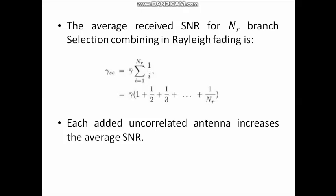Now consider the average received SNR for NR-branch selection combining in a Rayleigh fading channel. The equation is: gamma_SC = gamma_bar × Σ(i=1 to NR) 1/i, which expands to gamma_bar × (1 + 1/2 + 1/3 + ... + 1/NR). For NR = 1, gamma_SC = gamma_bar. For NR = 2, gamma_SC = 1.5 × gamma_bar.